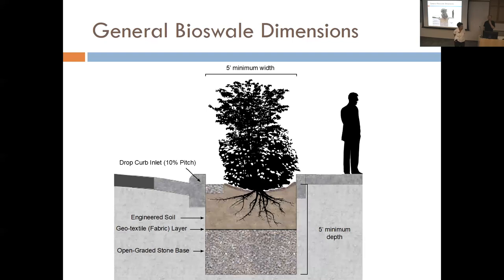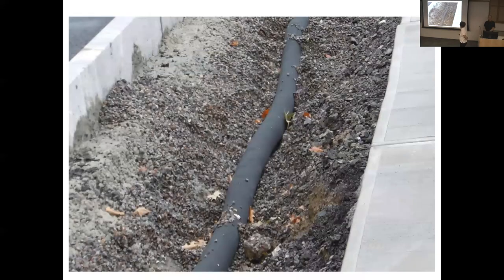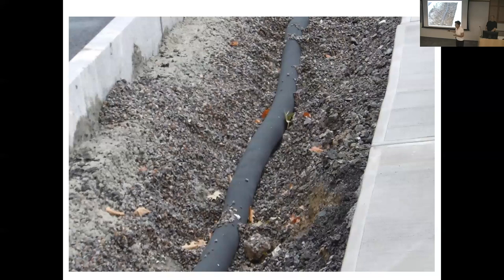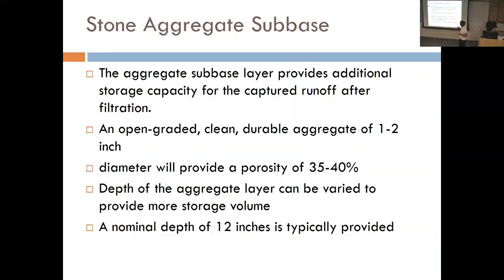The aggregate would typically be 12 to 24 inches. This was done on a shoestring at Cornell but still works pretty well. The aggregate sub-base provides a lot of storage capacity — it's important to have that reservoir under your soil. Open graded, clean, durable, one-to-two-inch aggregate gives you about 35 to 40 percent pore space that holds water. The depth can be varied to provide more storage volume.